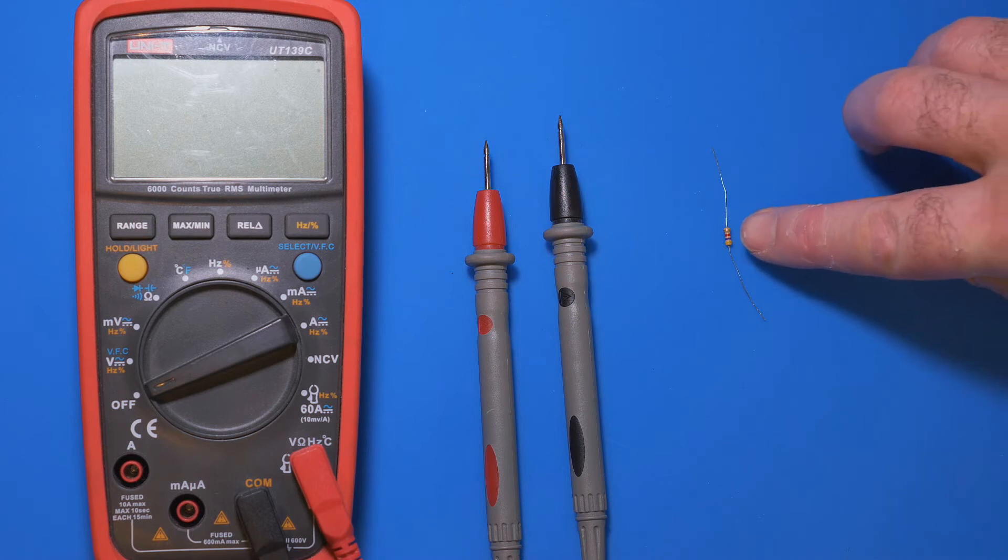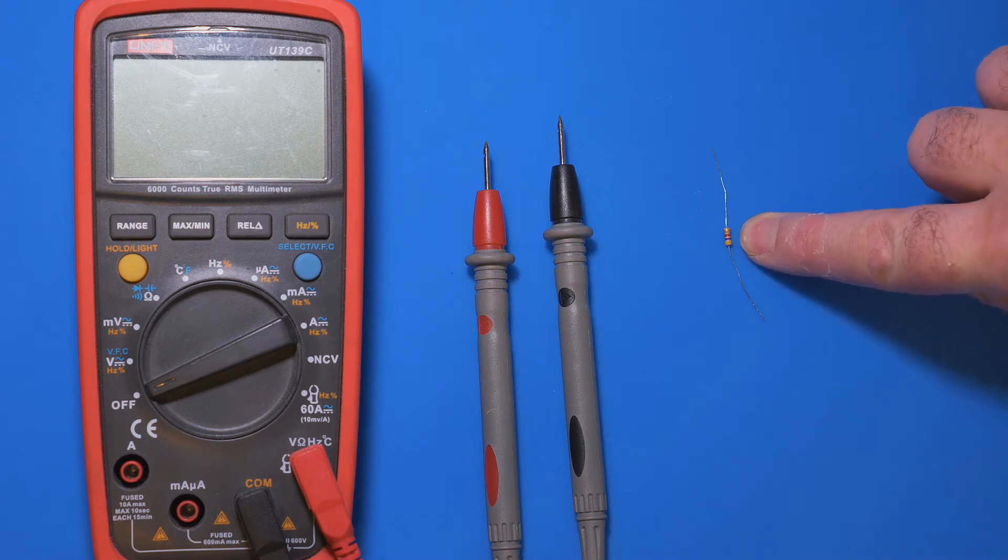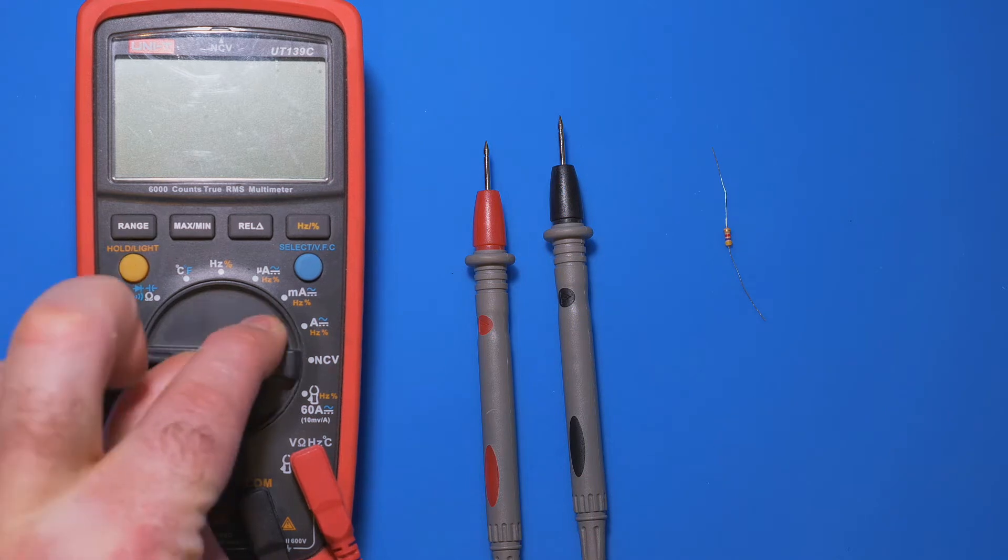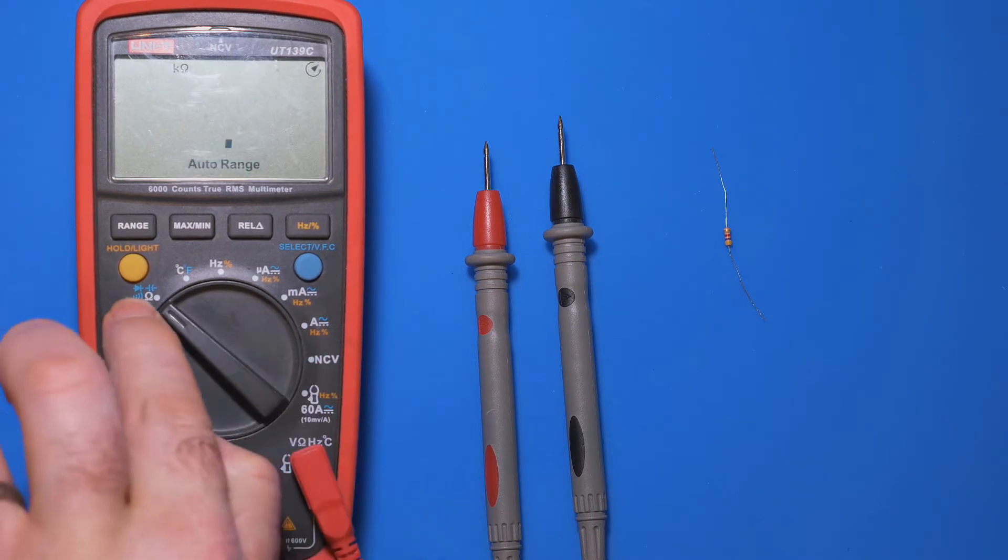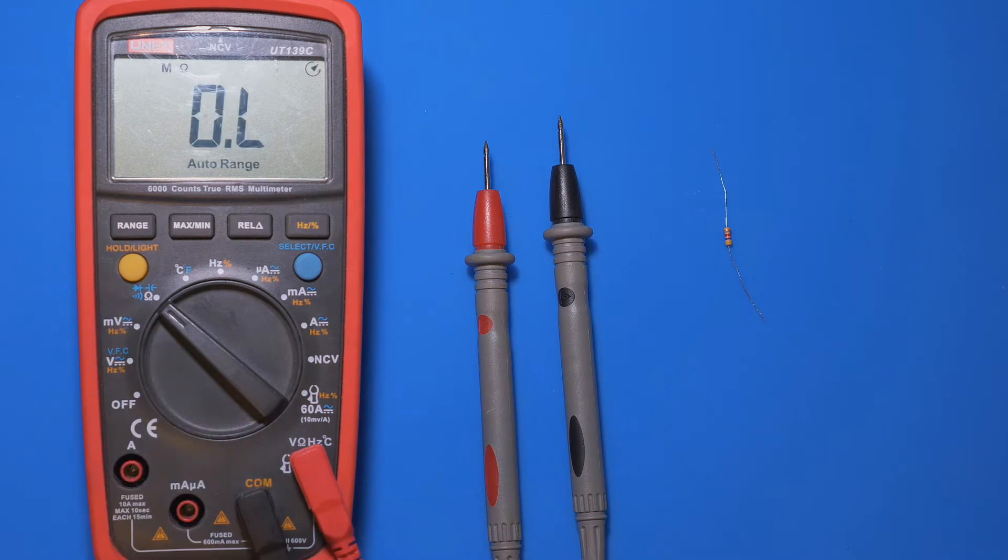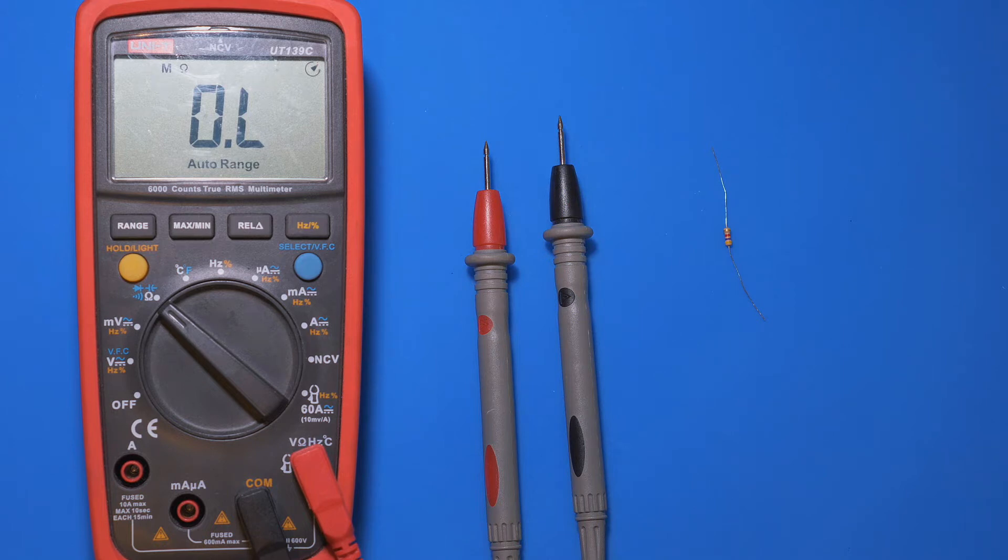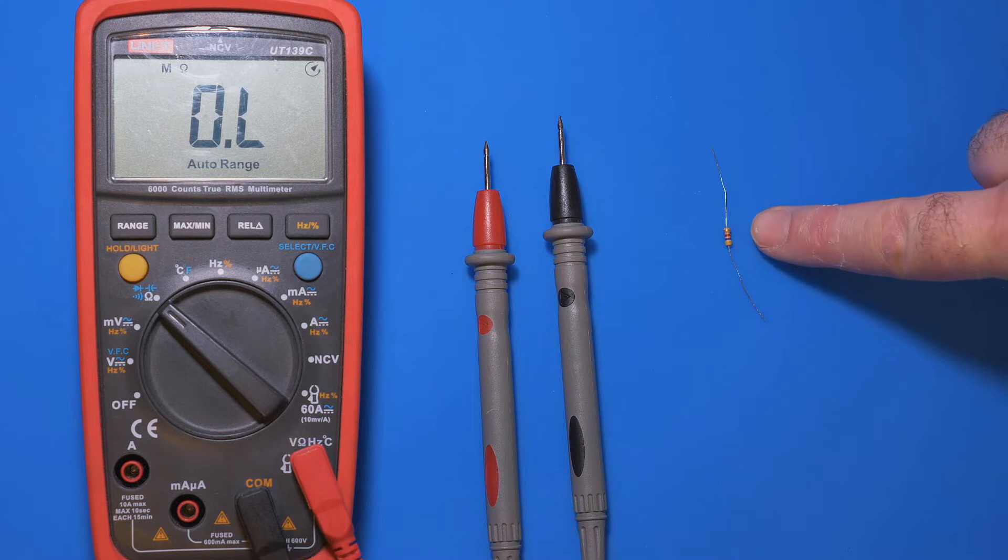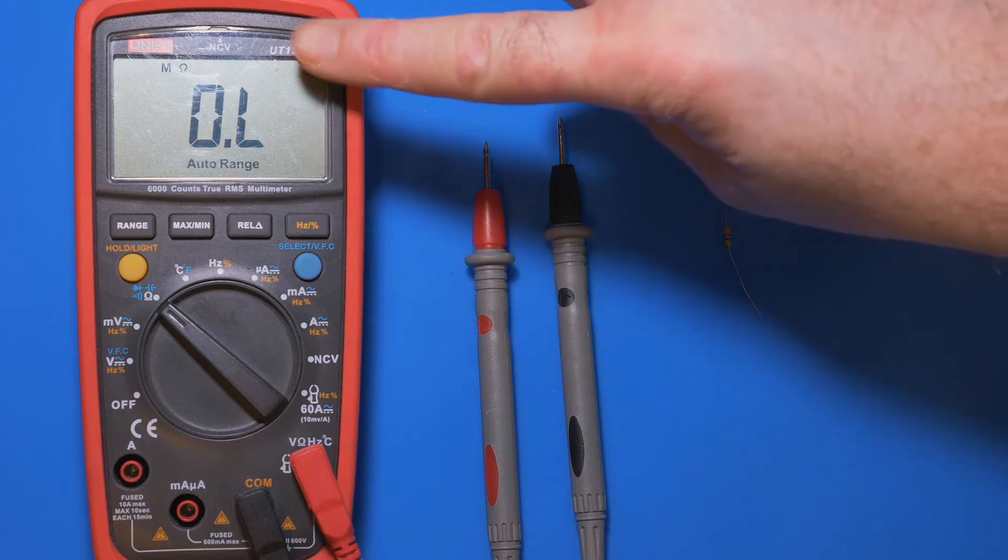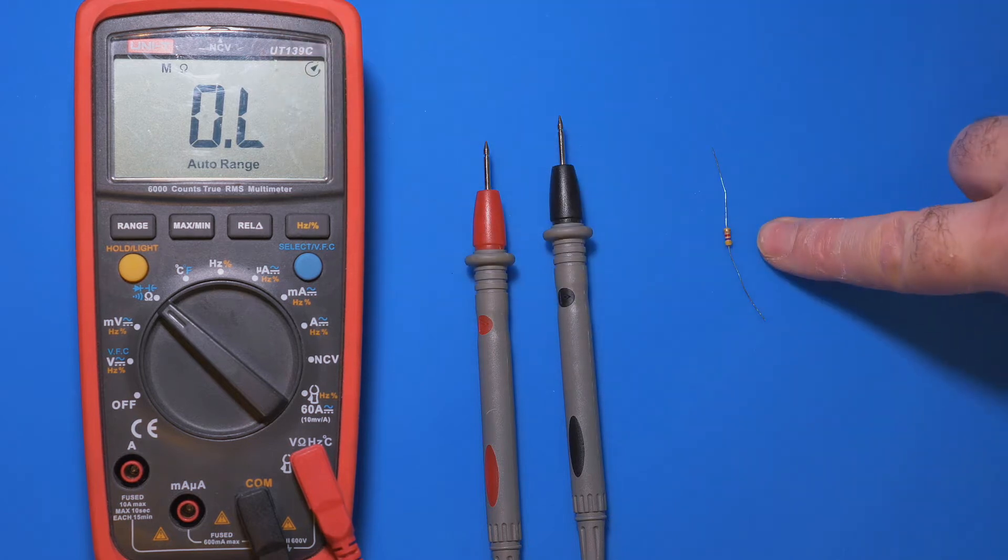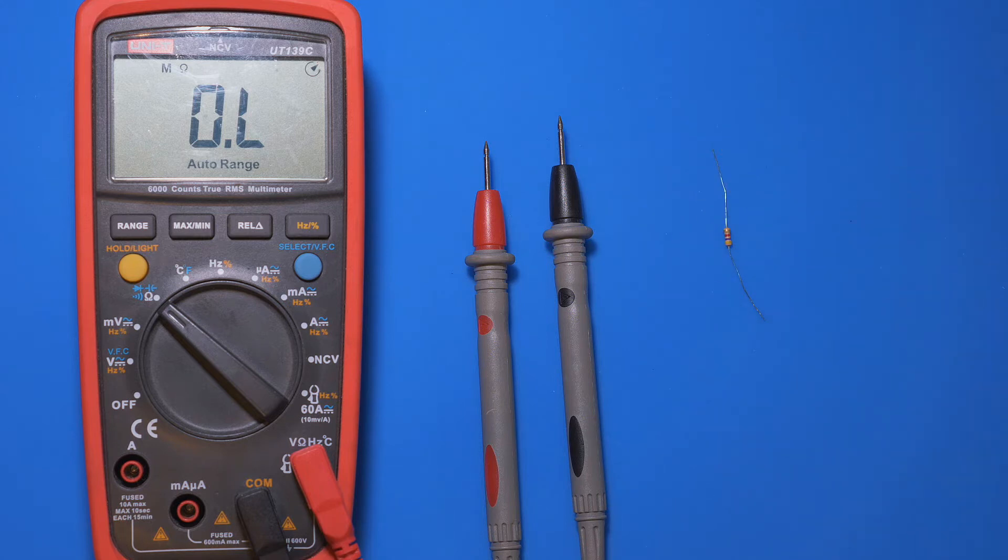So maybe we're being lazy and we don't want to go and look up the color code for this resistor. So we want to measure it and just check what it actually is. Now, all we need to do is switch this over to that symbol over there, ohms. And this here is an auto-ranging multimeter. So that means we don't need to set it to kilo-ohms or mega-ohms or whatever it might be. If it was set to mega-ohms, you wouldn't get a reading because it'd be way too small. But with auto-ranging, it'll actually try and find the range.